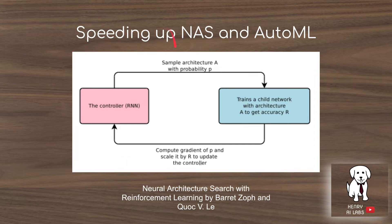When you sample a new neural network architecture, rather than training the child network, you would just plug in the same weight value for all the parameters and instantly have your evaluation of the designed architecture. This can additionally be useful if you want to combine neural architecture search with other hyperparameter optimizations and AutoML, like learning rates, optimizer parameters like the beta 1, beta 2 momentum terms in the Adam optimizer, or miscellaneous data augmentation parameters.